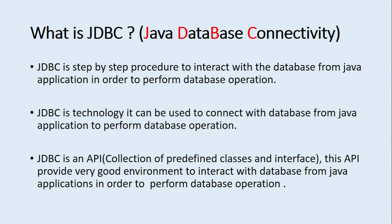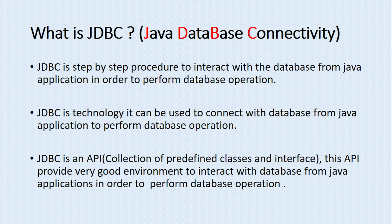The first definition says JDBC is a step-by-step procedure to interact with the database from a Java application in order to perform database operations. We could term JDBC as a step-by-step procedure which helps us to interact with the database from our Java application. Normally we perform DML and DDL operations — that is Data Manipulation Language and Data Definition Language operations.